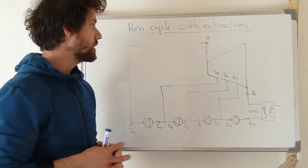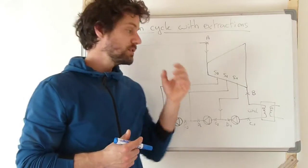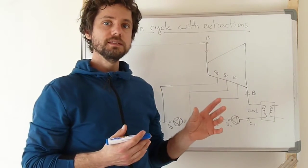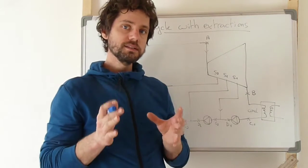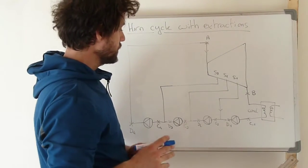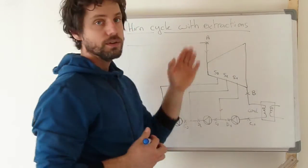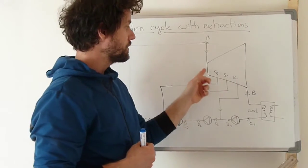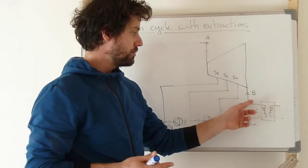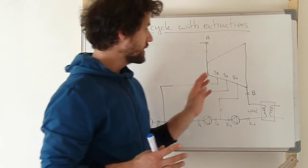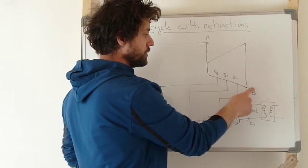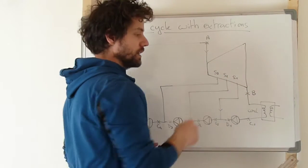In order to explain the principle of extraction and to have a schematic that is not too complicated, I have chosen to show these extractions with a more simple cycle with only one stage turbine and with three extractions during the expansion. Here we have a Hirn cycle, so the vapor is superheated and at high pressure at the inlet of the turbine, and it is going out at low pressure at outlet B of this turbine before going to the condenser. We have three extractions, numbered S1, S2, and S3.